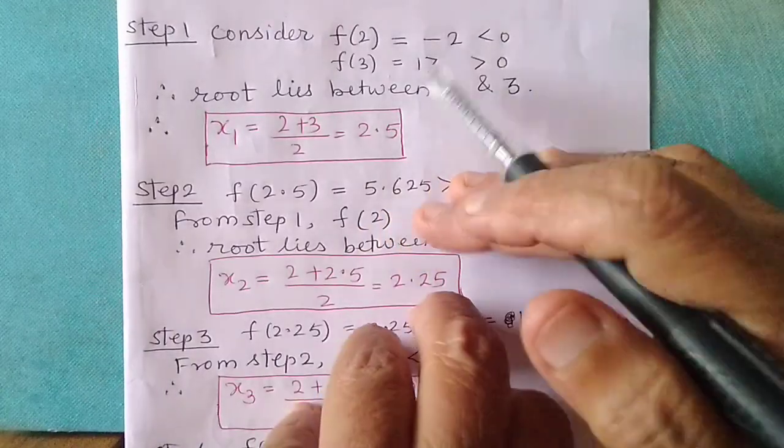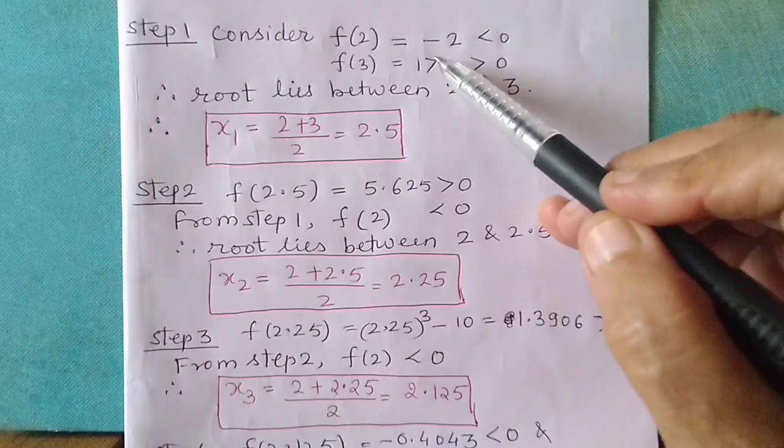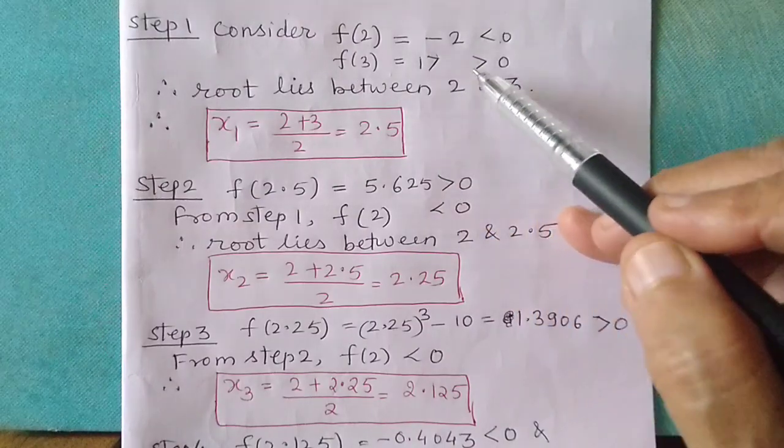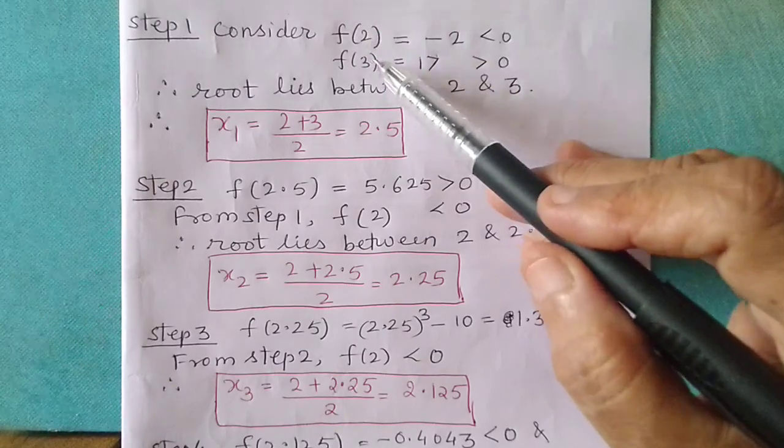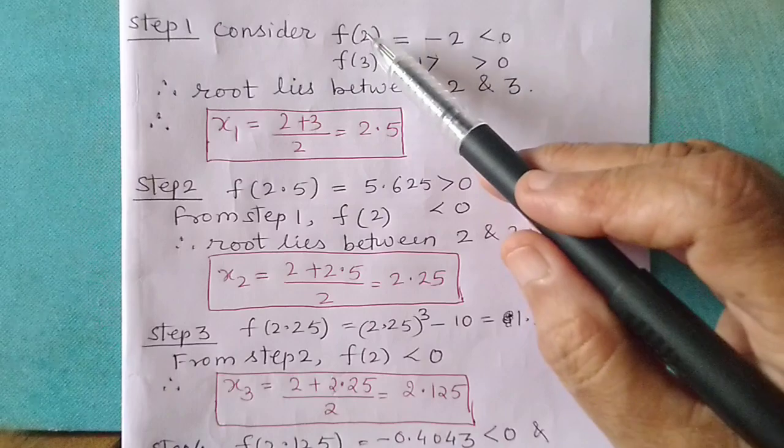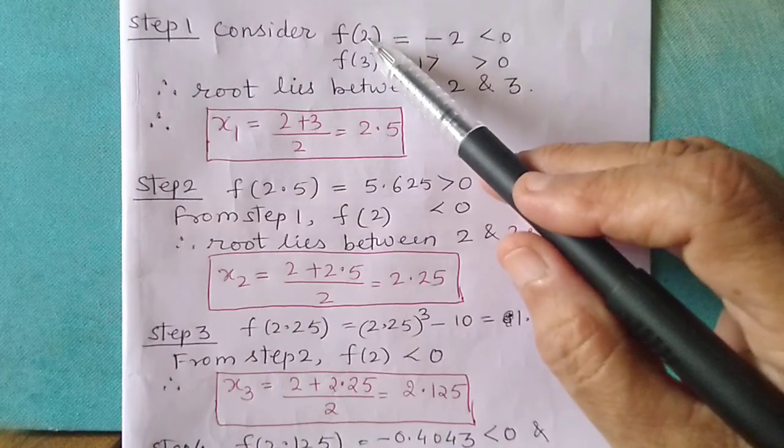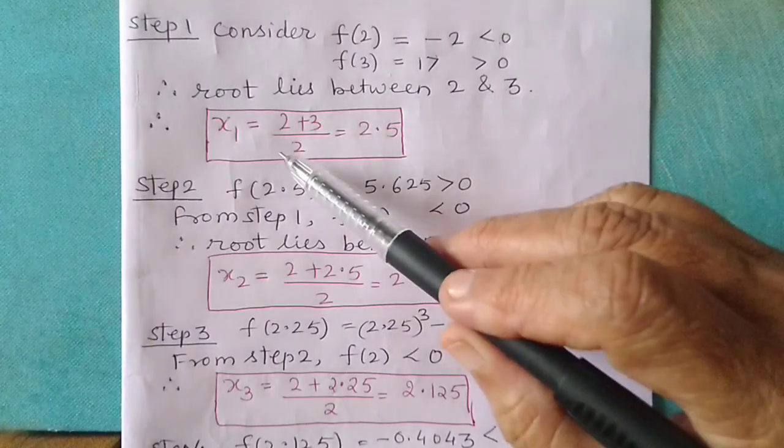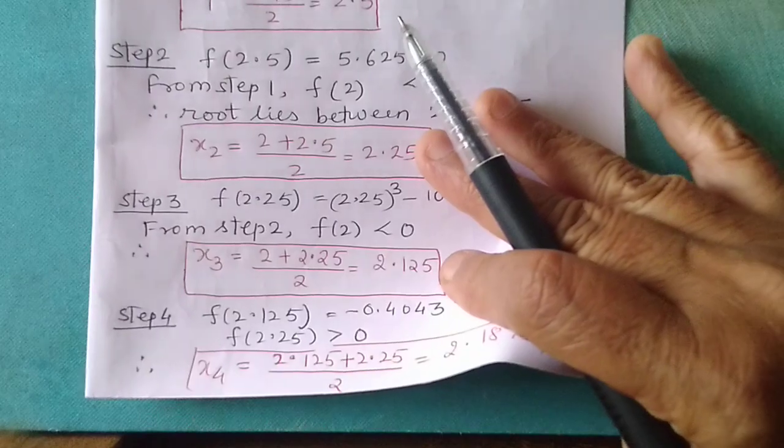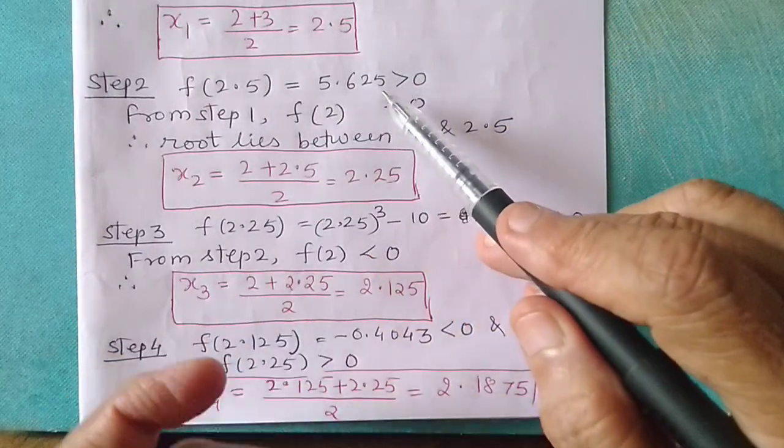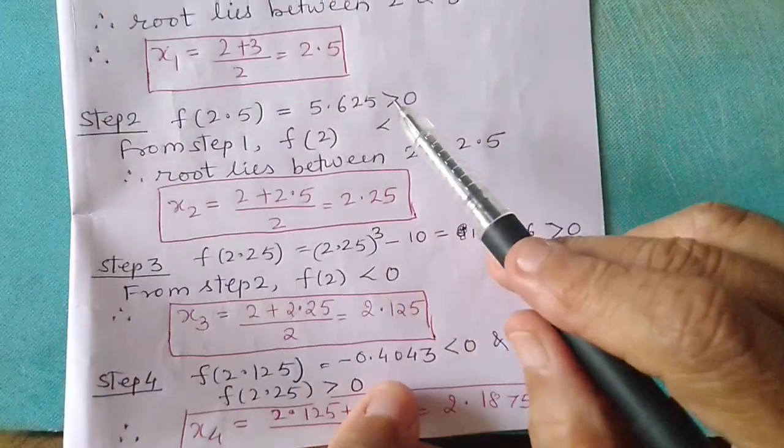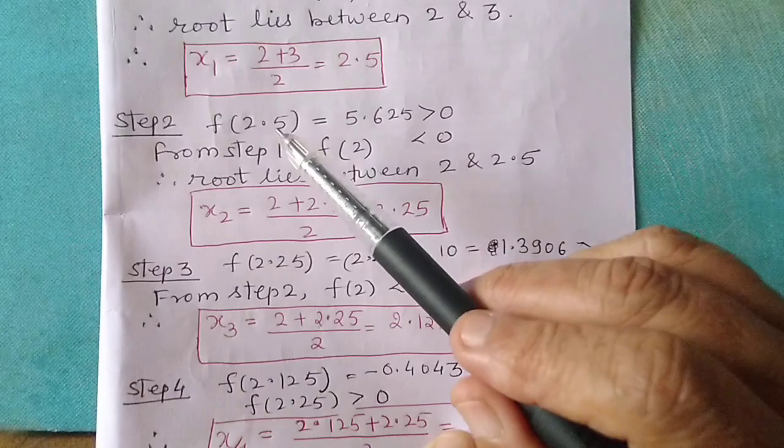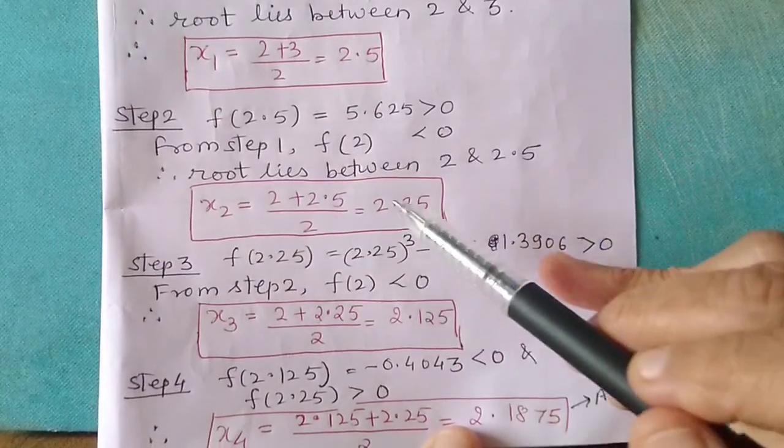First, I will find f of 2, which equals 2 cube minus 10, which is minus 2. f of 3 will be 3 cube minus 10, which equals 17. The root lies between 2 and 3. Now x1 is 2.5. f of 2.5 is 5.625, which is greater than 0. From step 1, f of 2 is less than 0, so the second approximate value is between 2.5 and 2, which is 2.25.